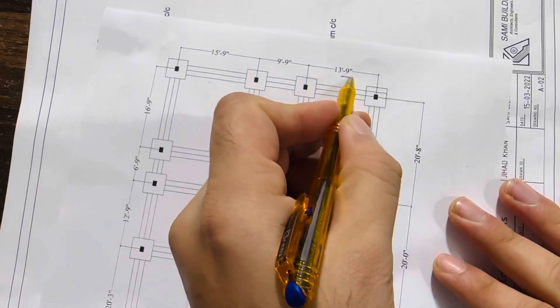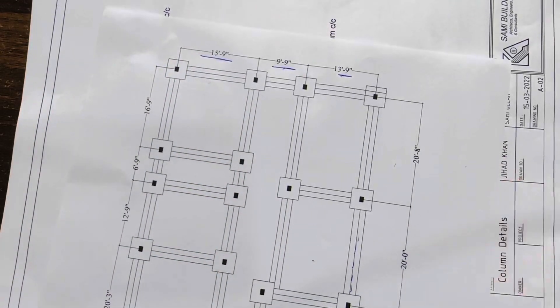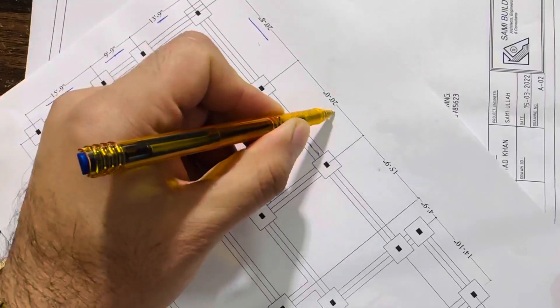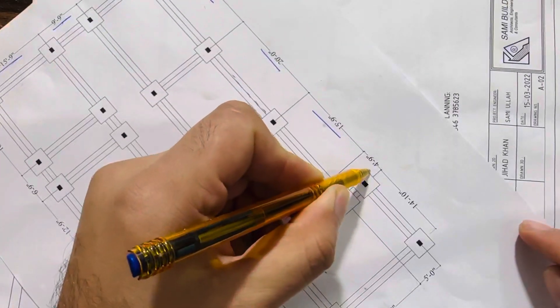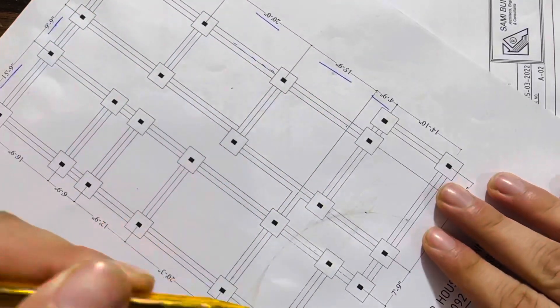You can see here the span between two columns is 13 feet 9 inches, this is 9 feet 9 inches, this is 15 feet 9 inches widthwise. And lengthwise: 20 feet 8 inches, 20 feet, 15 feet 9 inches, 4 feet 9 inches.